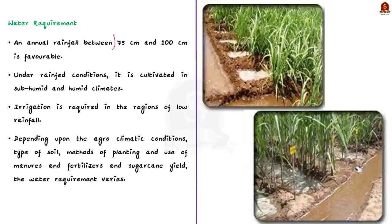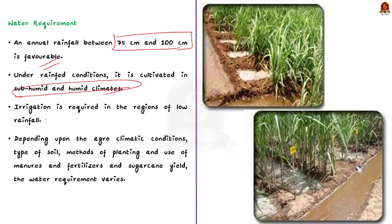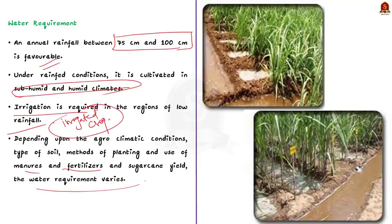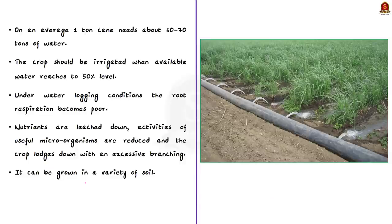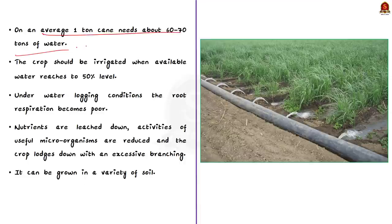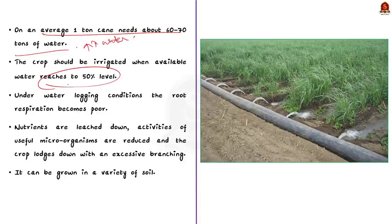See an annual rainfall between 75 centimeter and 100 centimeter is favorable for sugarcane production and under rain fed condition it is cultivated in humid and subhumid climates. Irrigation is required in the areas of low rainfall and it is a largely an irrigated crop in India. See depending upon the agro climatic conditions and type of soils methods of planting and use of manure and fertilizers the water requirement for sugarcane varies from place to place. The hot weather associated with dry winds and drought increases the water requirement for the crop. On an average, one ton of sugarcane needs at least 60 to 70 tons of water and the crop should be irrigated when available water reaches 50 percent level.